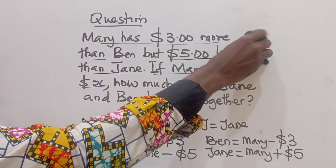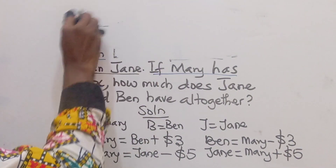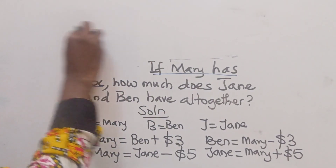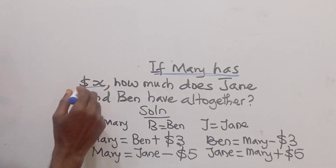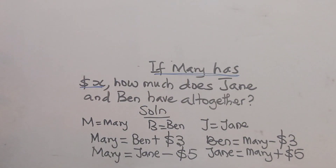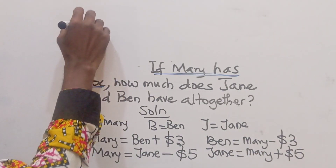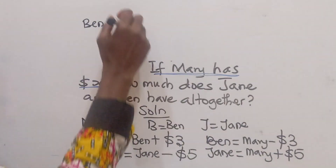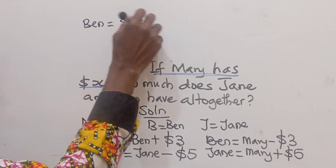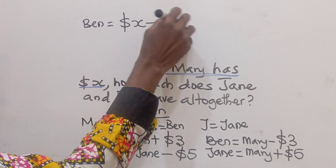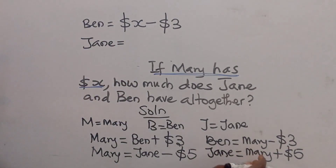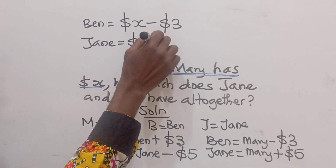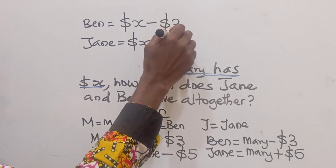The equation says Mary has x dollars, so we can substitute Mary as x. That means Ben equals x dollars minus three dollars, and Jim equals x dollars plus five dollars.